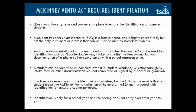Auditable documentation of a student's housing status other than an SRQ can be used for identification, such as a Google Doc or survey, an intake form, other written communication, or documentation of a phone call or conversation with a school representative. A student can be identified as homeless even if a student residency questionnaire, intake form, or other documents were not completed or signed by a parent or guardian. If a family does not want to be identified as homeless but the LEA has been able to determine that the student meets the McKinney-Vento definition, the LEA must proceed with identification and coding. It is also important to note that identification is assessed annually and only for a school year — coding does not carry over from year to year.